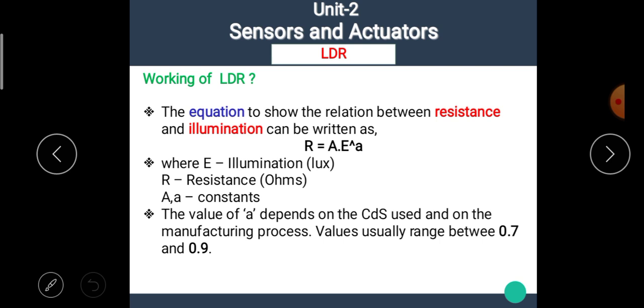Now the equation to show the relation between resistance and illumination can be written as R equals A into E raise to a. Where E is illumination or lux. It is measured in lux unit. R is resistance, measured in ohms. While both capital A and small a are constants. The value of small a depends on the cadmium sulphide used and on the manufacturing process. The values usually range between 0.7 and 0.9.